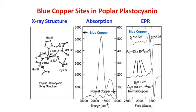Coming to the spectral characterization of this blue copper protein as found in plastocyanin, first we will talk about the X-ray structure. The bond parameters shown — such as copper-nitrogen and copper-sulfur bond distances of 2.04 and 2.10 Å — are often obtained from the X-ray crystal structure of this molecule. X-ray structure is very important in order to understand bond length and bond angle of this metal-to-ligand coordination.